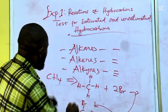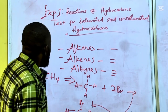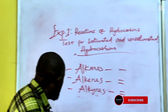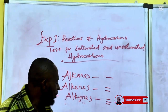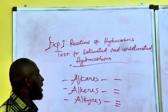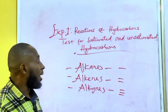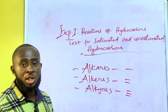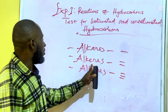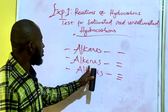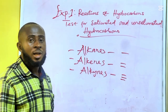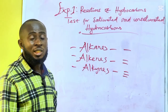Now coming to alkenes — alkenes are double bonded. Because they are double bonded, they are quite reactive. They can undergo both addition reaction and substitution reaction.